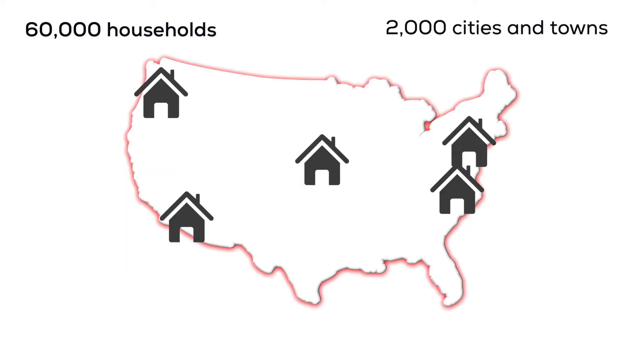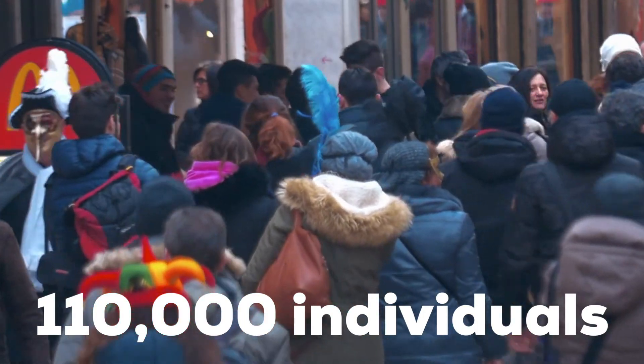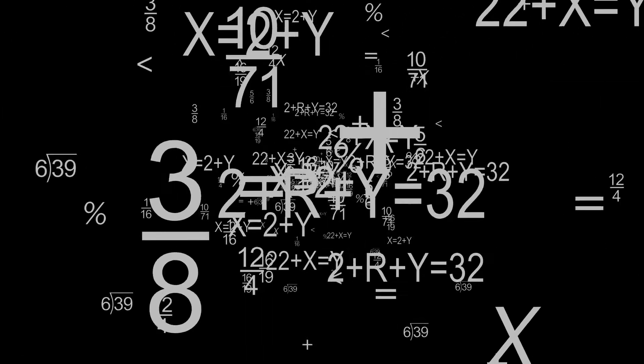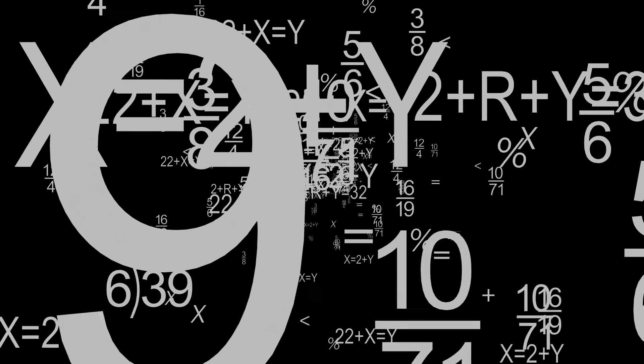During the month, the BLS samples 60,000 households in 2,000 different geographic regions. These households are made up of roughly 110,000 individuals. Every month, the BLS replaces a quarter of the households, and no household can be in the data more than four consecutive months. Based on the answers of the survey, the BLS estimates the total number of people unemployed in the U.S. and what the unemployment rate is.